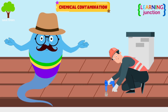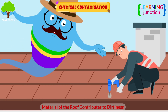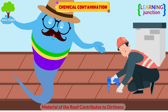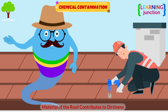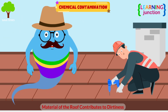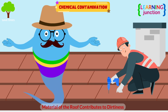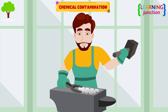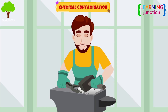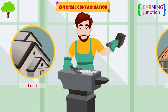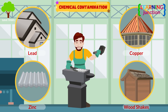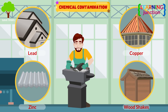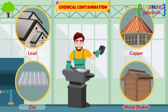Chemical contamination: the material of the roof itself might contribute to the dirtiness of the rainwater. Some roofing materials like lead, copper, zinc, and wood shakes may release pollutants that contaminate the water.